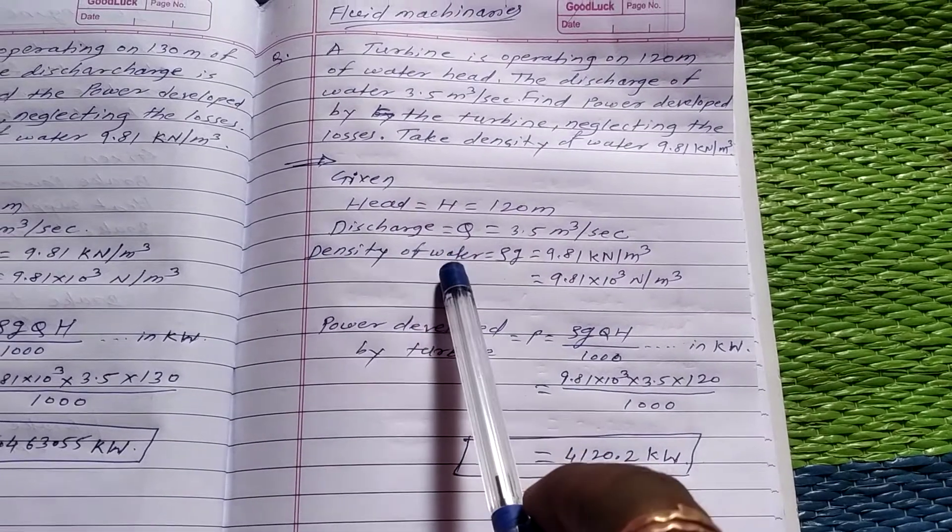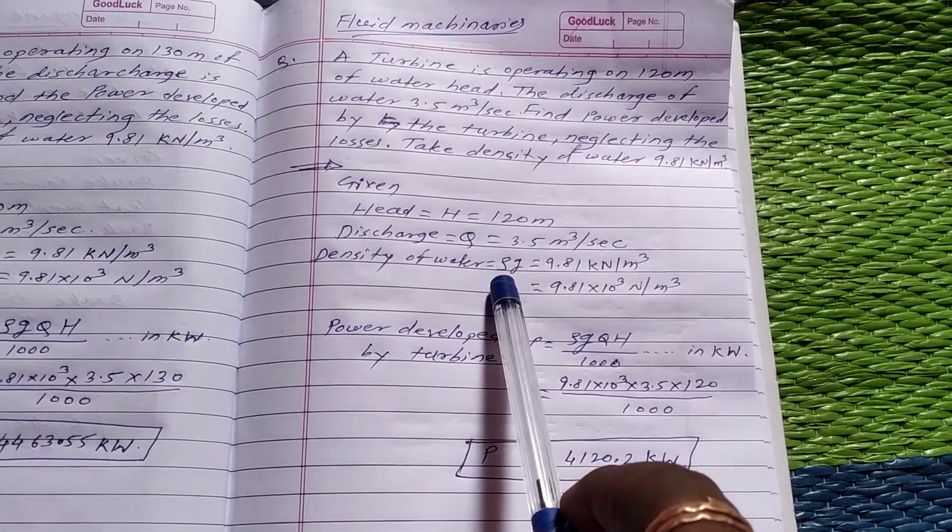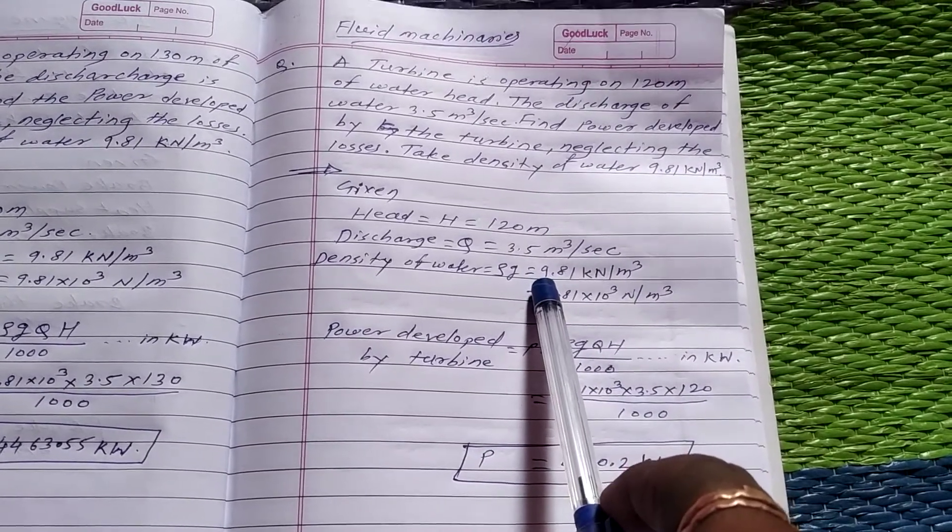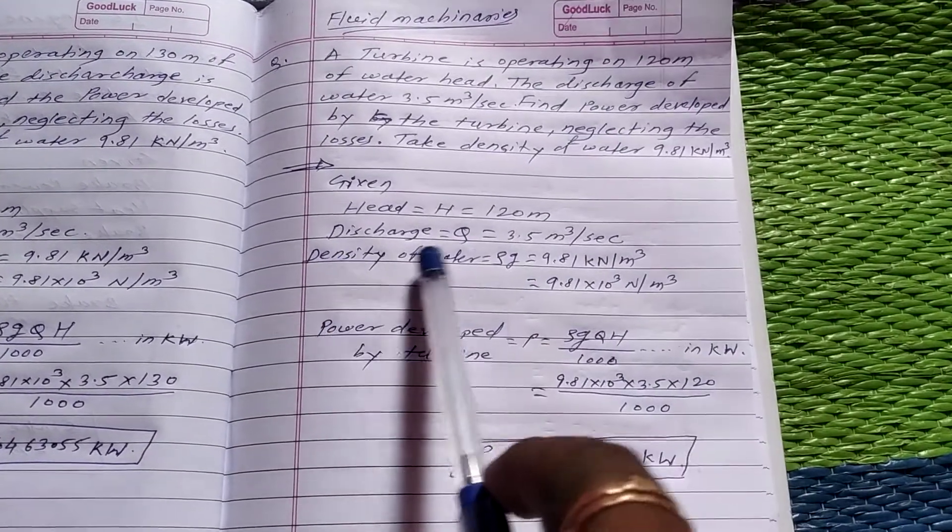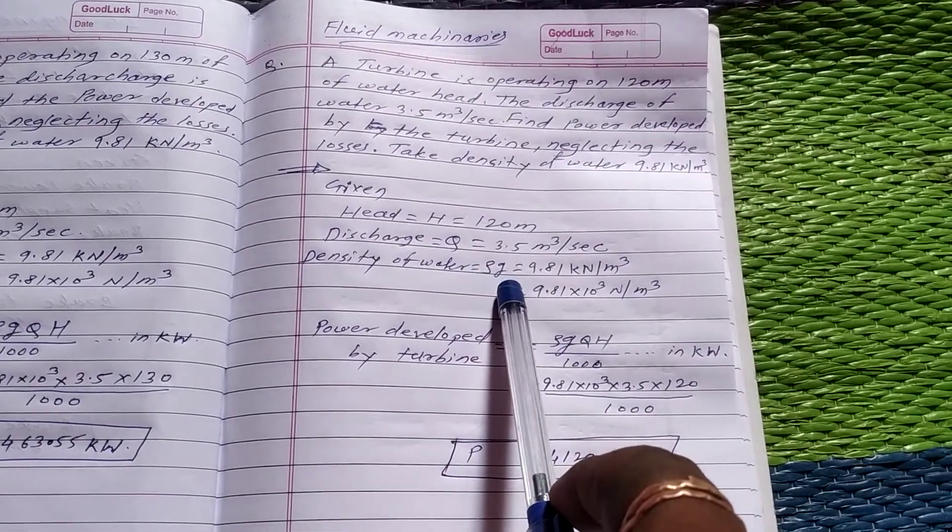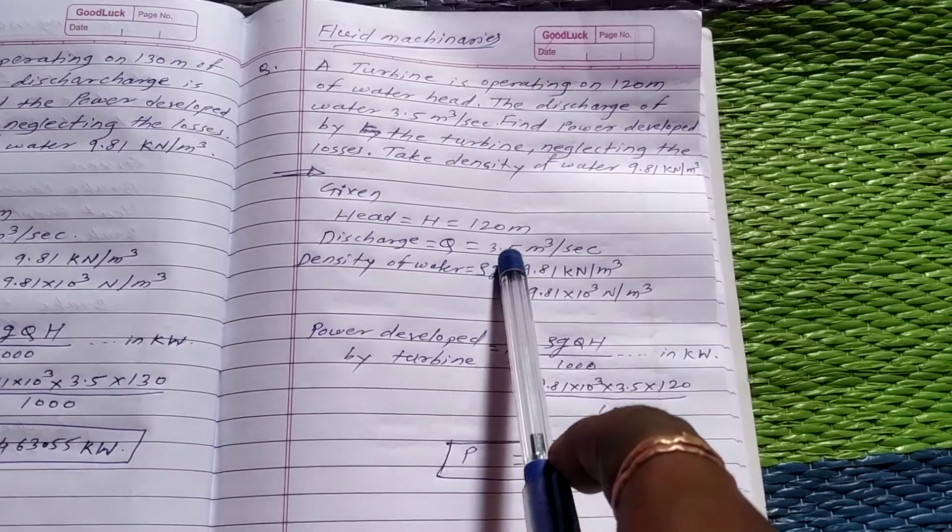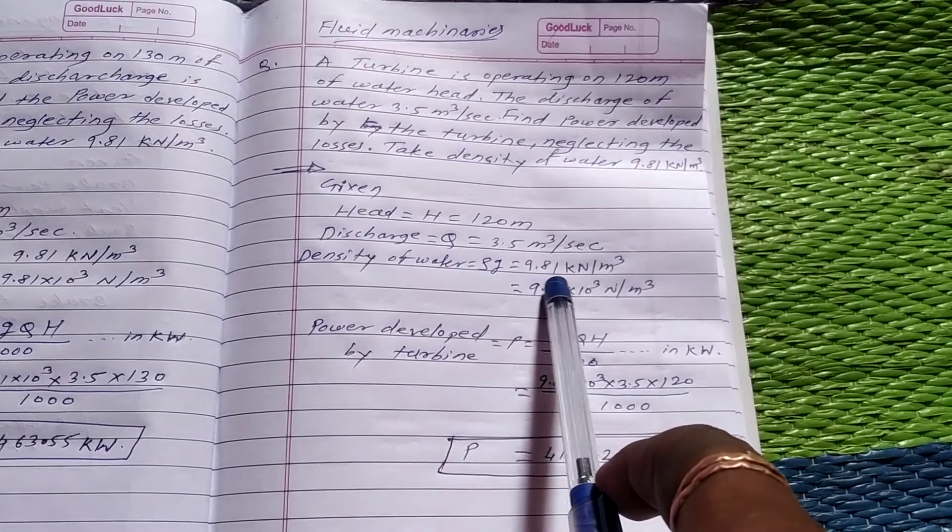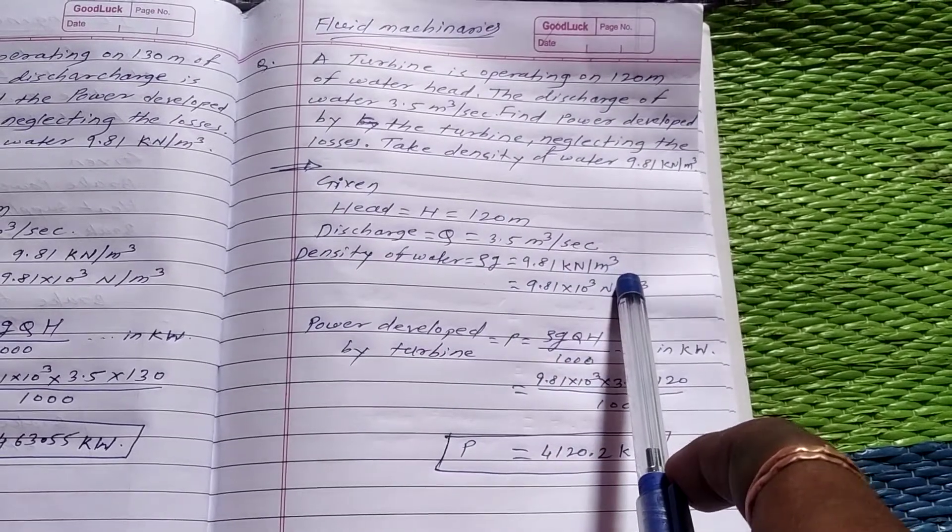Density of water, ρG = 9.81. The density is shown by ρ and gravity is shown by G. The total density of water is given, ρG = 9.81 kN per meter cube.